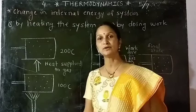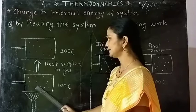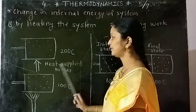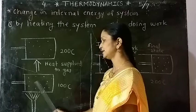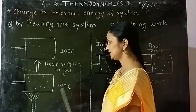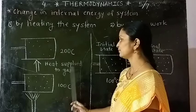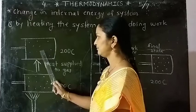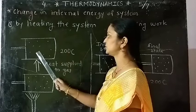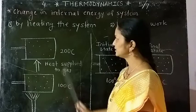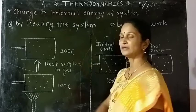Consider a gas in a cylinder kept in contact with a body at a higher temperature. The gas is our system; the other parts are the environment. When heat is supplied to the gas, its internal energy increases and the temperature of the system increases — suppose from 100 degrees Celsius to 200 degrees Celsius. This is one way of changing the internal energy of the system.